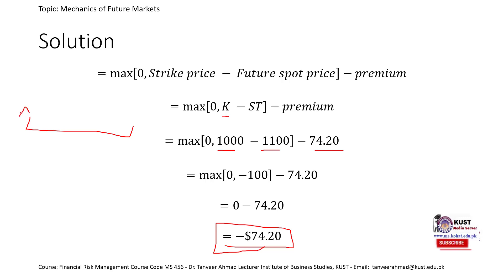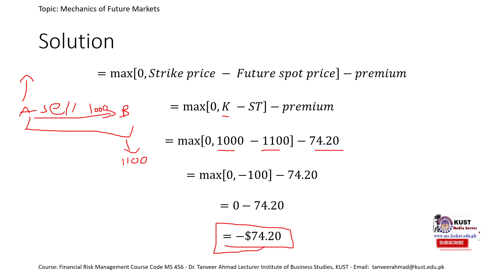The logic is that in a long put, the option holder is selling the asset — as opposed to the long call where they buy. Option holder A is going to sell the asset to B at the agreed price of 1000 on expiration. But the market price at expiration is 1100, so A would not exercise this option. A is not going to buy at 1100 and sell to B at 1000. There is no profit or loss from the transaction itself — the only loss is the premium paid.